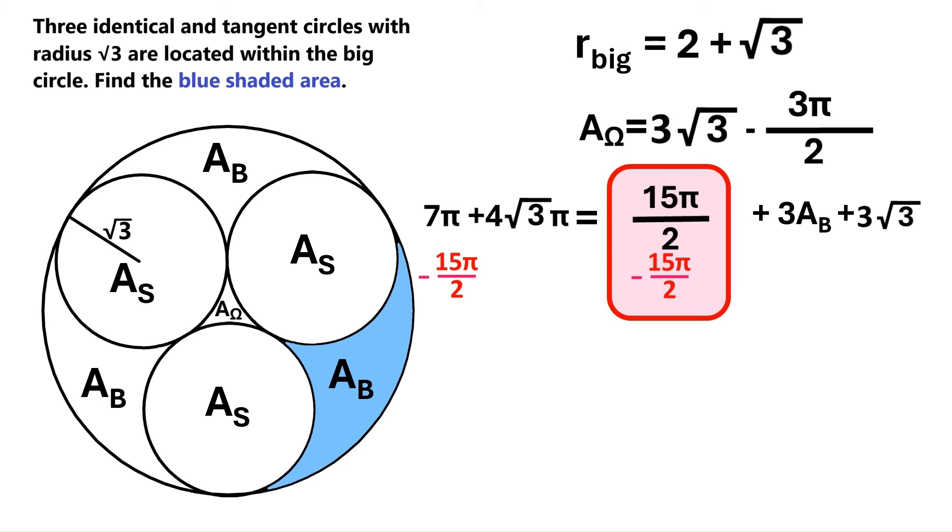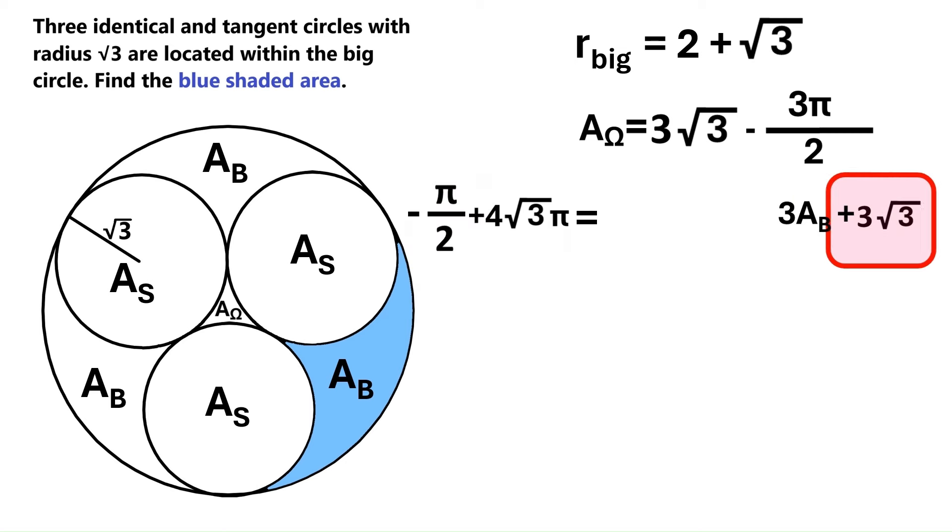Next, we subtract 15 pi over 2 from both sides of the equation. These guys over here cancel out. And on this side, we get minus pi over 2. Now, let's take this 3 times radical 3 to the other side where it gets a minus sign.